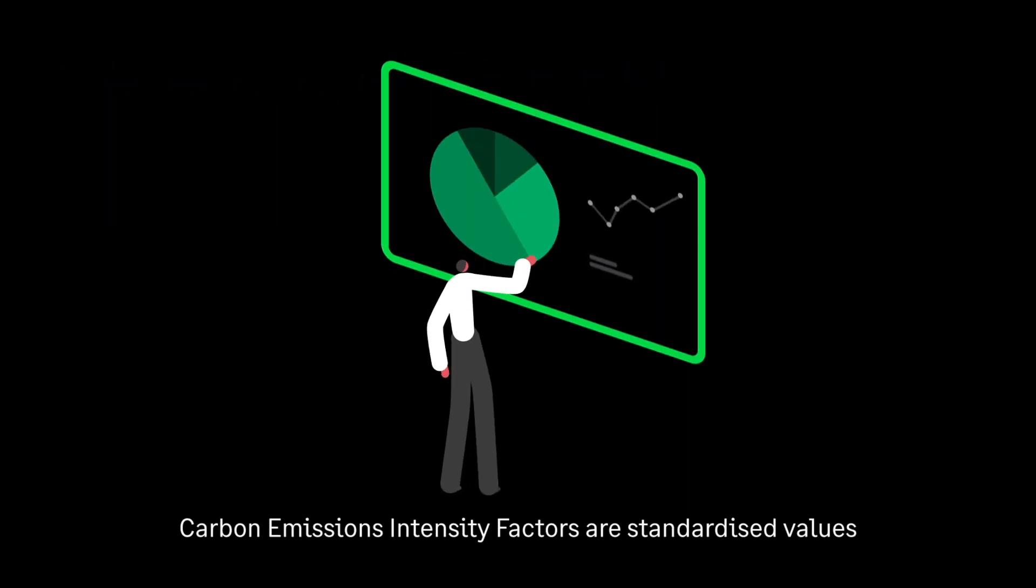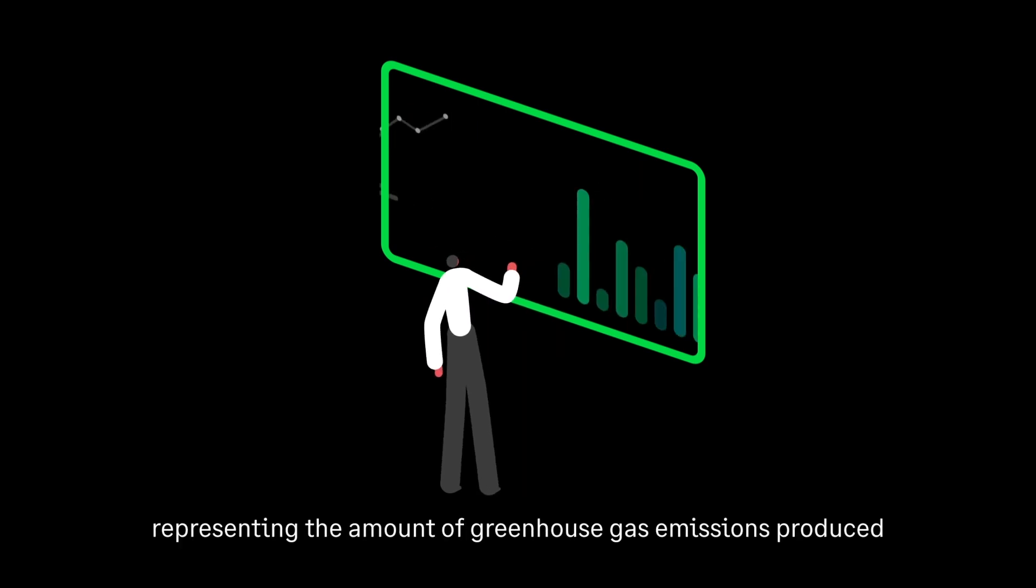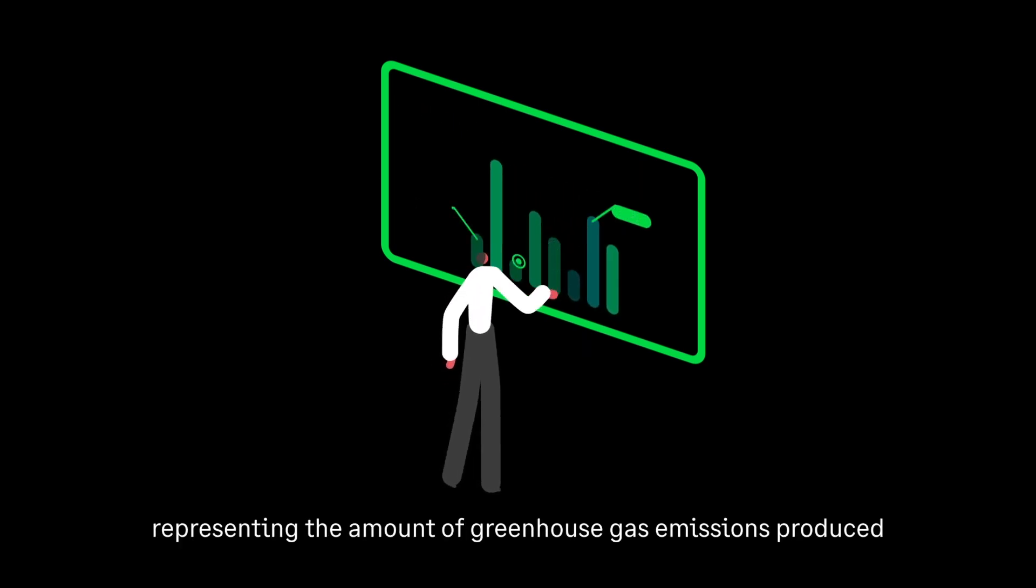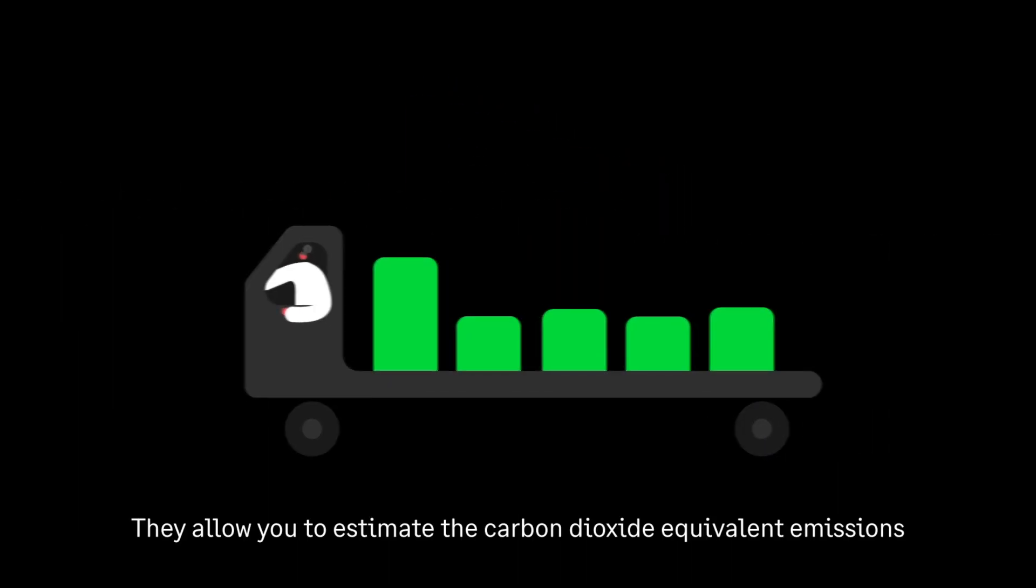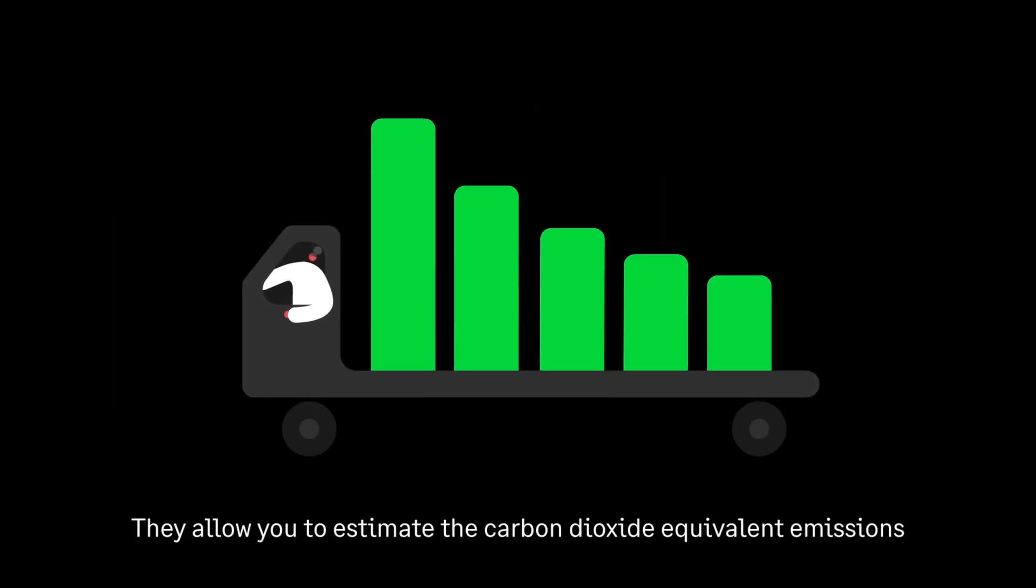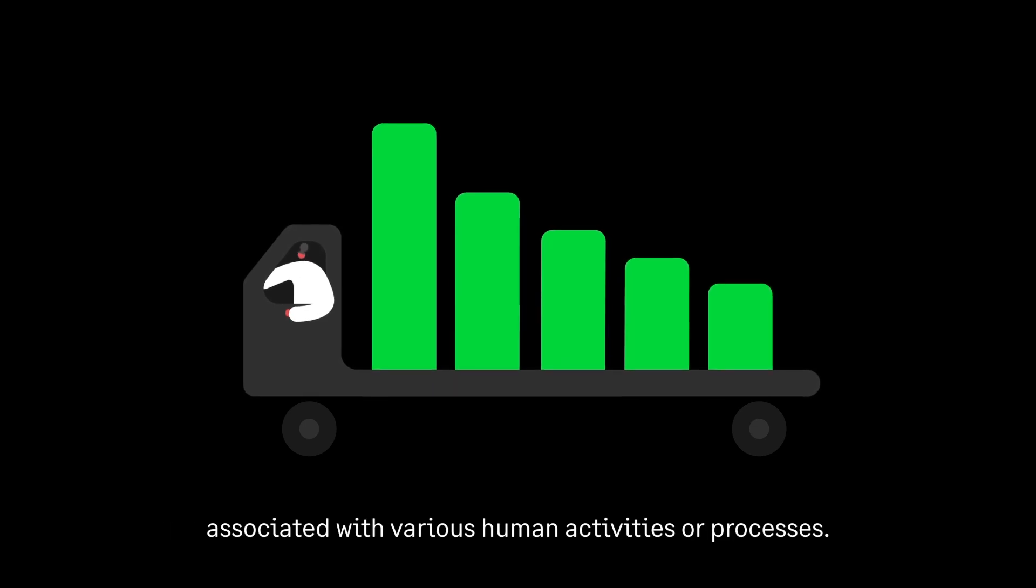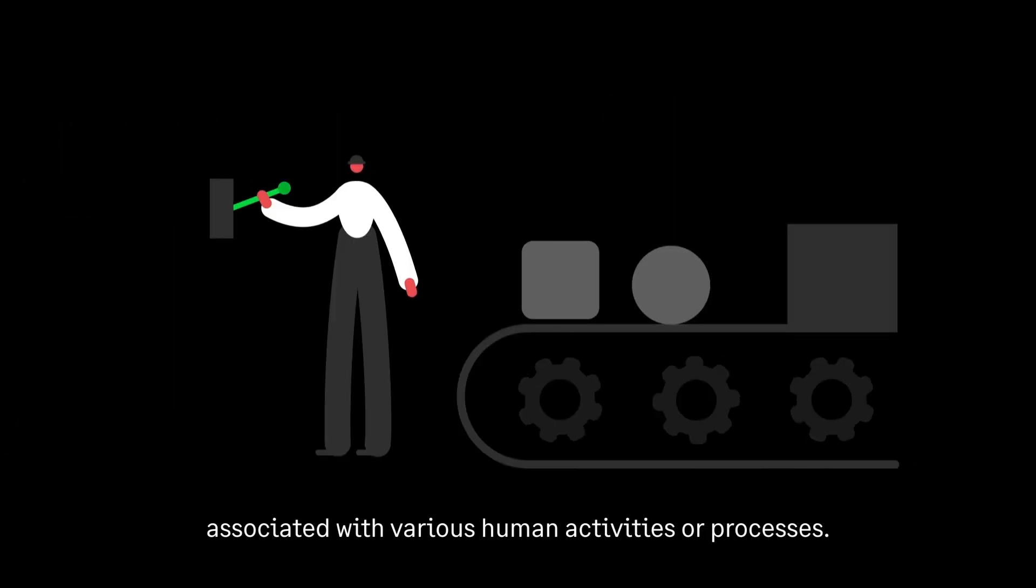carbon emissions intensity factors are standardized values representing the amount of greenhouse gas emissions produced per unit of activity or resource consumed. They allow you to estimate the carbon dioxide equivalent emissions associated with various human activities or processes.